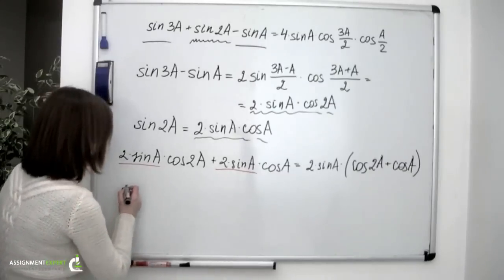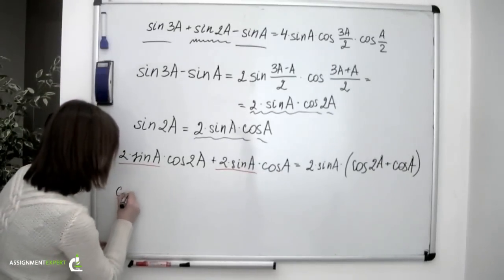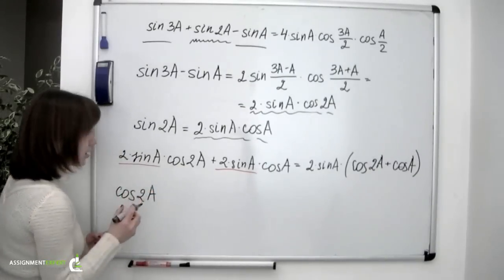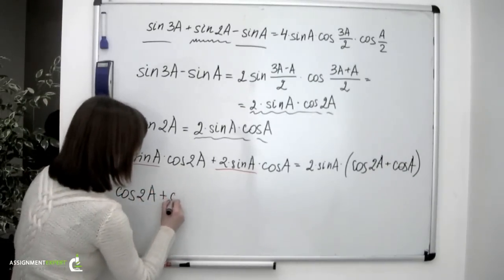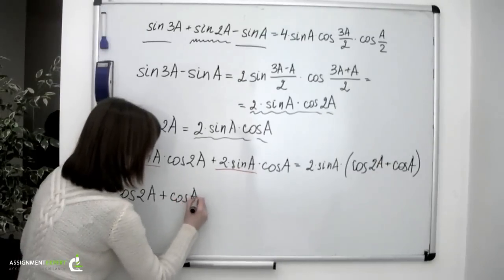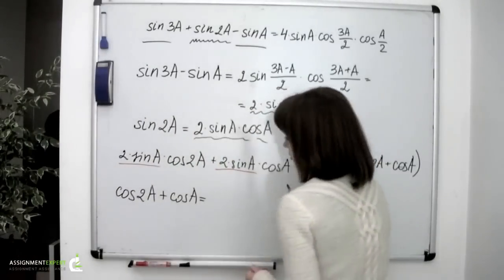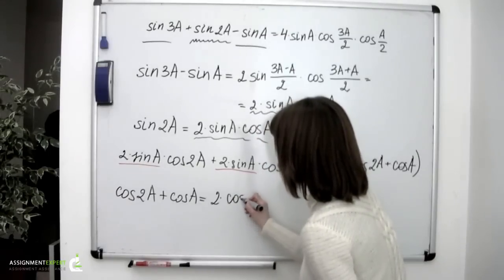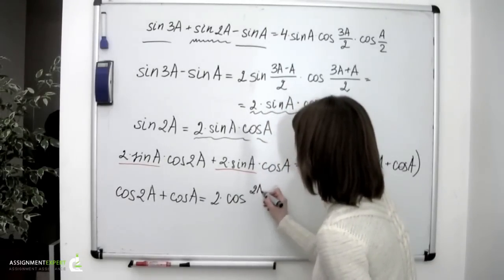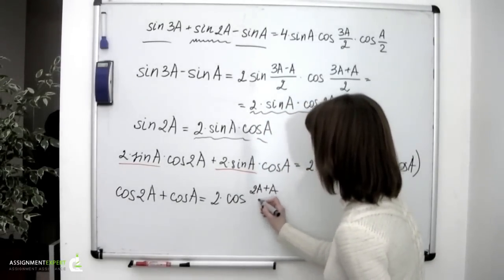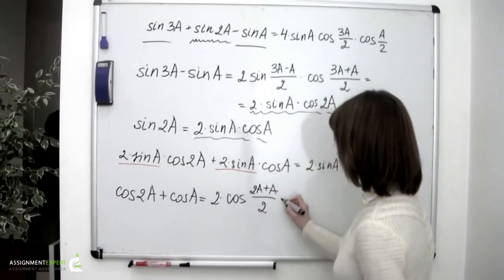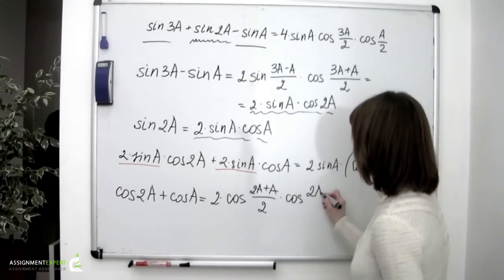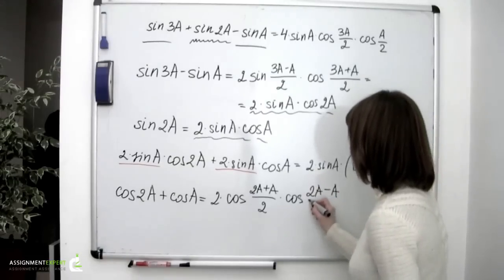And let's recall another trig identity, according to which cosine 2a plus cosine a equals 2 times cosine 2a plus a over 2 times cosine 2a minus a over 2.